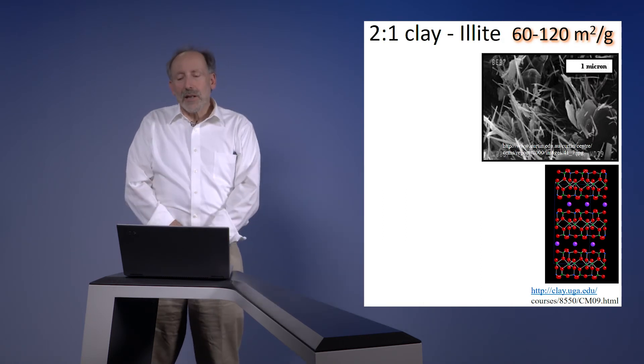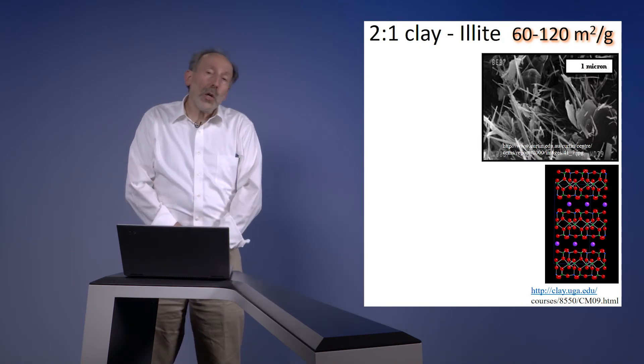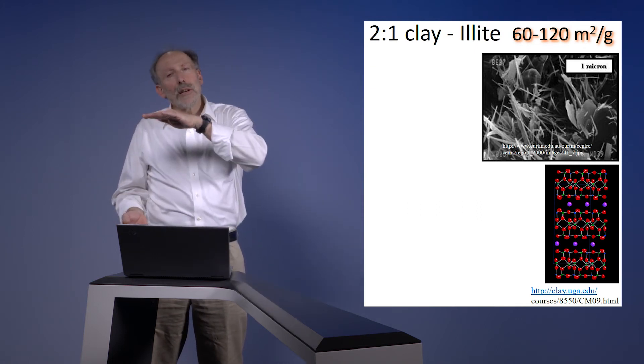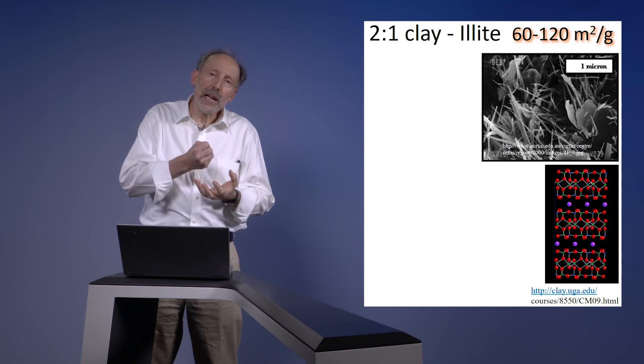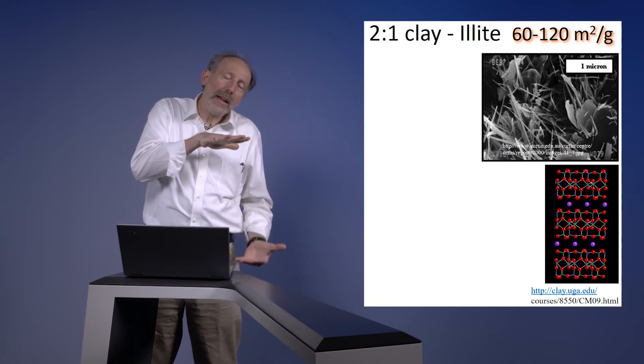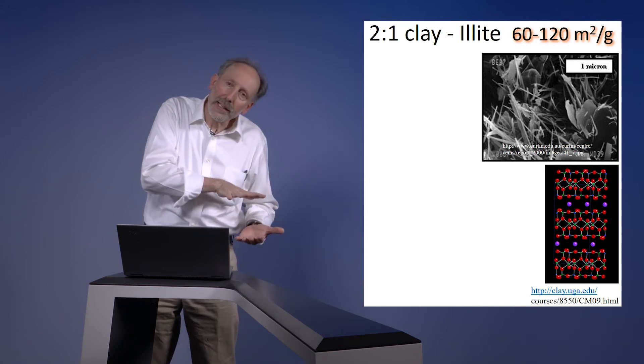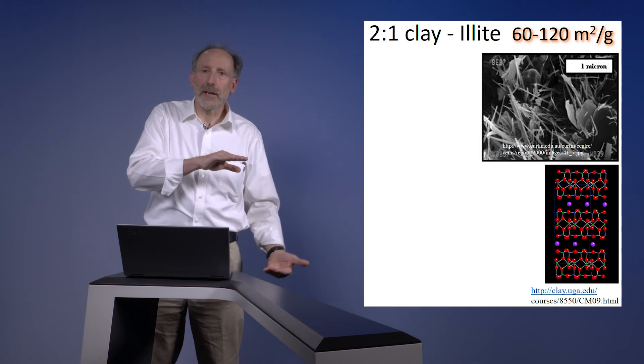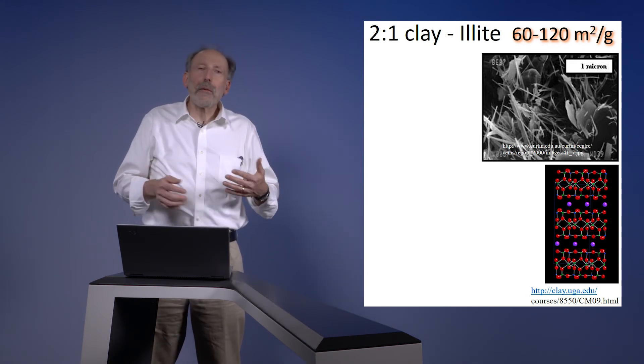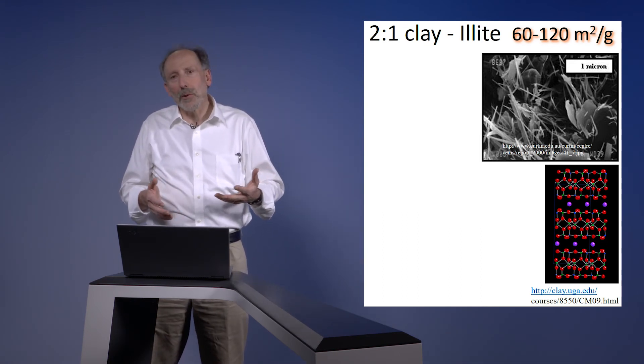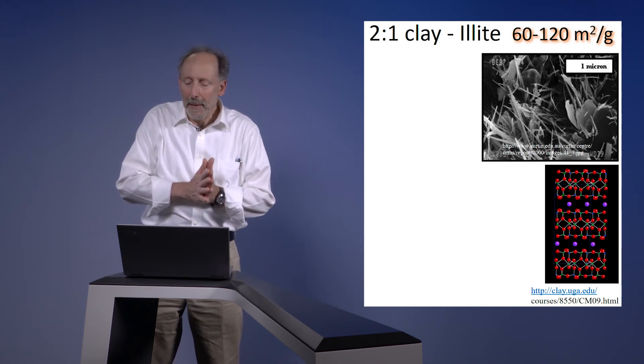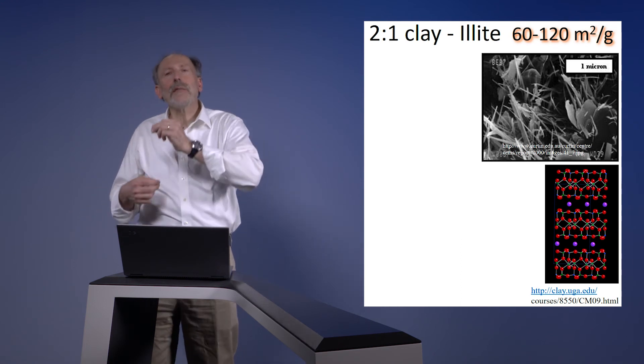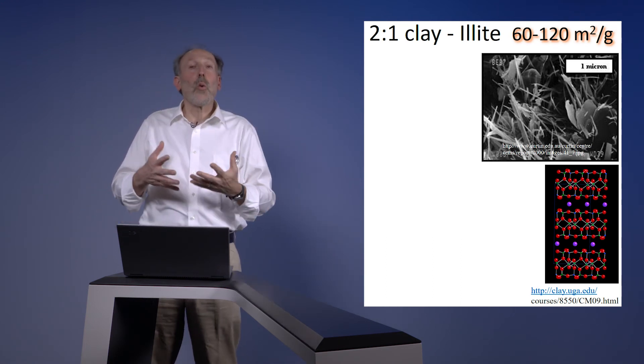In the middle are clays such as the illites, which are also 2 to 1 clay, but now with isomorphic substitution more focused in the tetrahedral layer so that the cations are more tightly held. The layers between the successive 2 to 1s are more tightly held together, meaning that the effective surface area is just the exterior of that package, which is now down at around 100 square meters per gram. Still an impressive amount of surface area, but the chemistry of the cations because of where the isomorphic substitution is, is quite different.